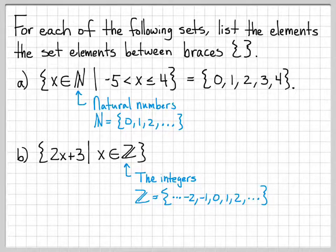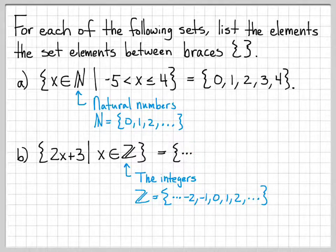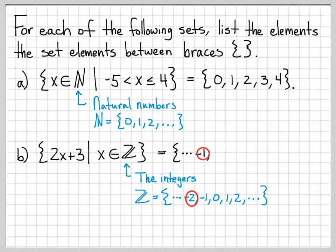So what does this set look like if each element has the form 2x + 3 for every single value of x in ℤ? The best way to do this is to start picking specific values. When x is equal to negative 2, this quantity turns into 2 times negative 2, which is negative 4, and negative 4 plus 3 gives negative 1. So when x equals negative 2, the element of the set takes on the value negative 1.